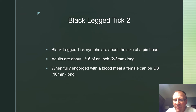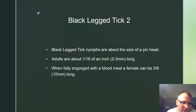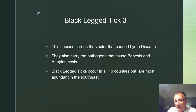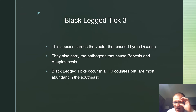Black-legged tick nymphs are about the size of a pinhead. Adults are about one-sixteenth of an inch or two to three millimeters long. When fully engorged, a female with a blood meal can be three-eighths to ten millimeters long. This species carries the vector that causes Lyme disease, and also carries pathogens that cause Babesiosis and Anaplasmosis. The black-legged tick occurs in all ten counties but is most abundant in the southeast.